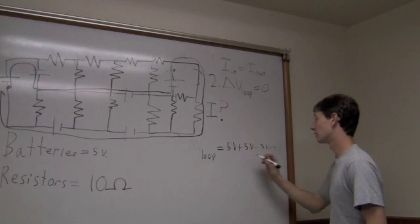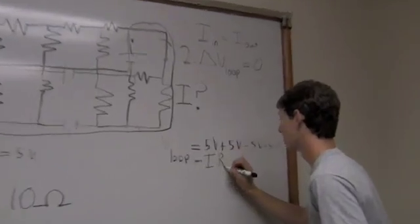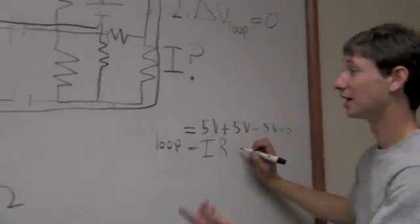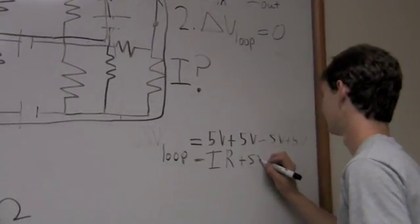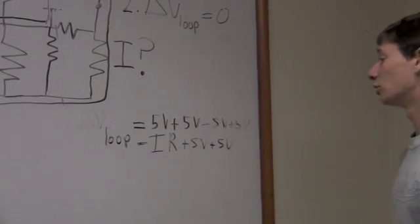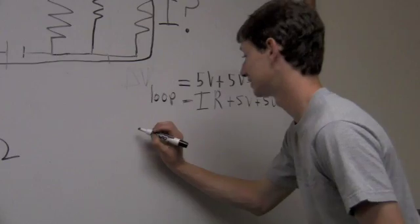and then we have minus IR, and we know that R is 10 ohms, as we've stated for the problem, plus 5 more volts, plus 5 more volts. So, now, we have the change in voltage of the loop, and we can set that to 0, as Kirchhoff's law states.